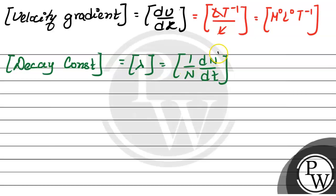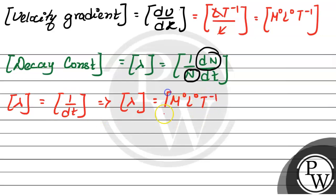I can say from here that the dimension of lambda equals M^0 L^0, or 1/dT, T to the power minus 1.